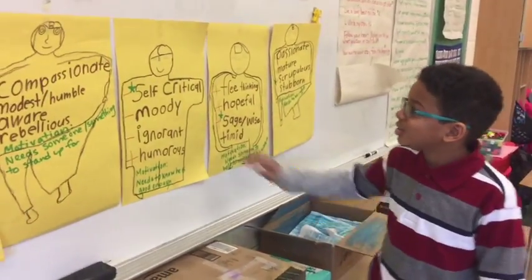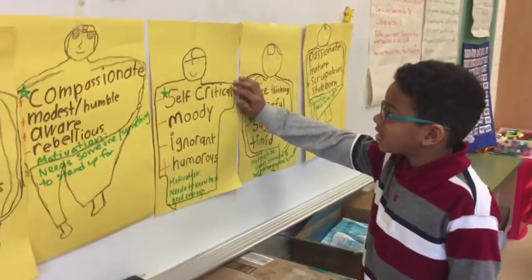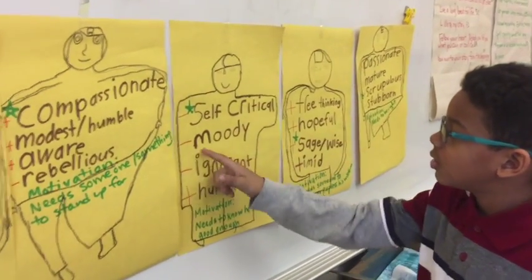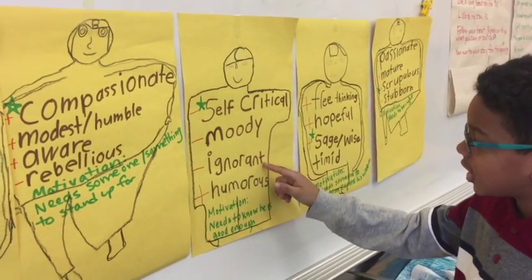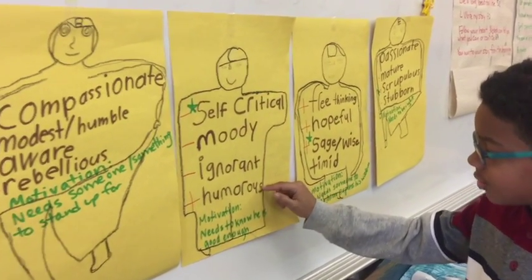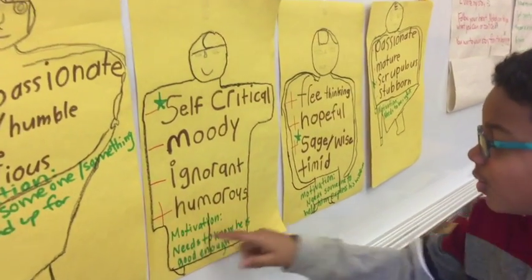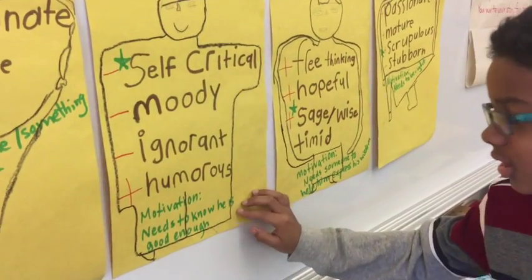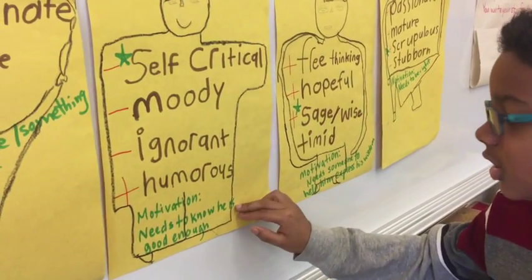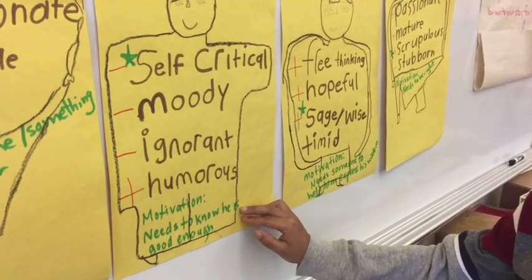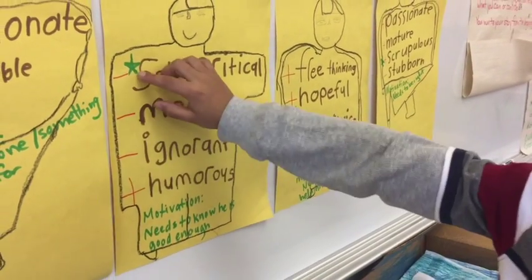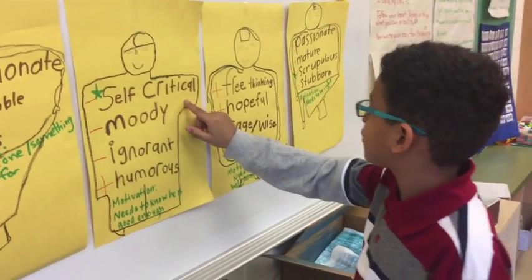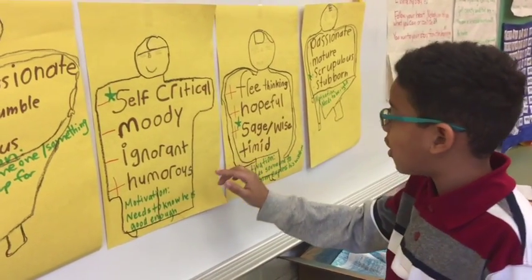Character C's traits are self-critical, moody, ignorant and humorous. Its motivation is that he needs to know if he's enough. We put the star near his dominant trait which is self-critical.